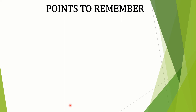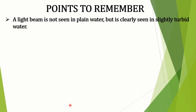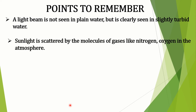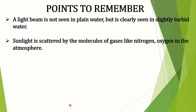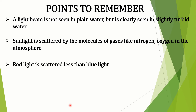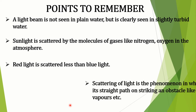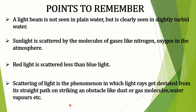Now let us see the points to remember. A light beam is not seen in plain water but is clearly seen in slightly turbid water. Sunlight is scattered by the molecules of gases like nitrogen and oxygen in the atmosphere. Red light is scattered less than blue light. Scattering of light is a phenomenon in which light rays get deviated from their straight path on striking an obstacle like dust or gas molecules, water vapors, etc.